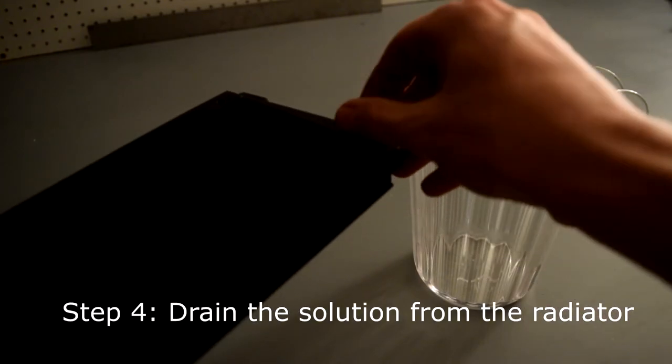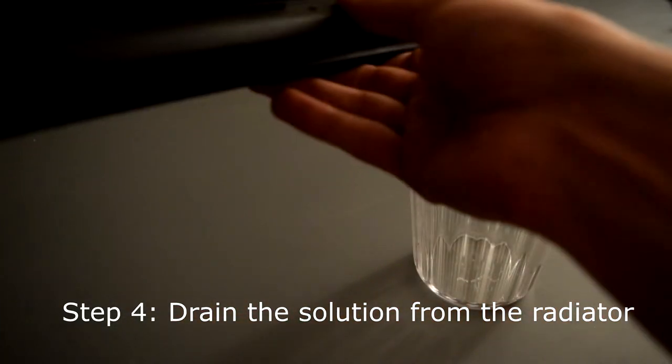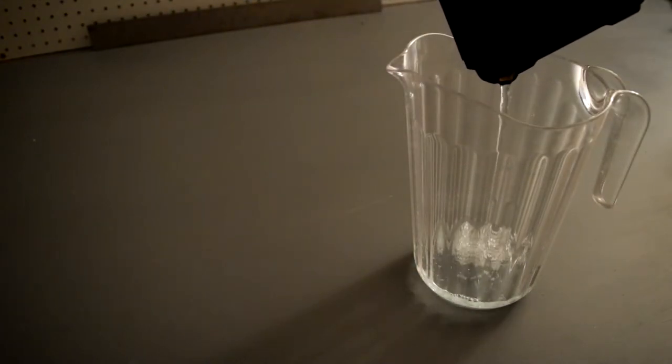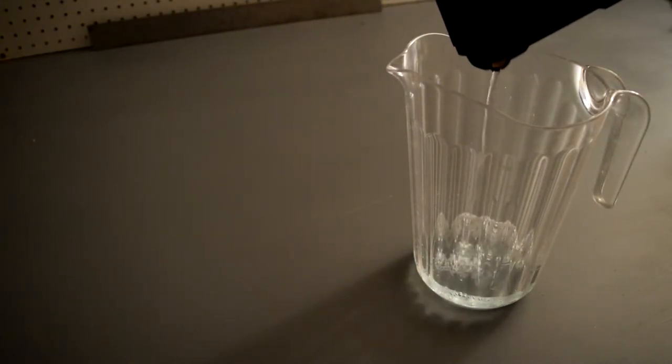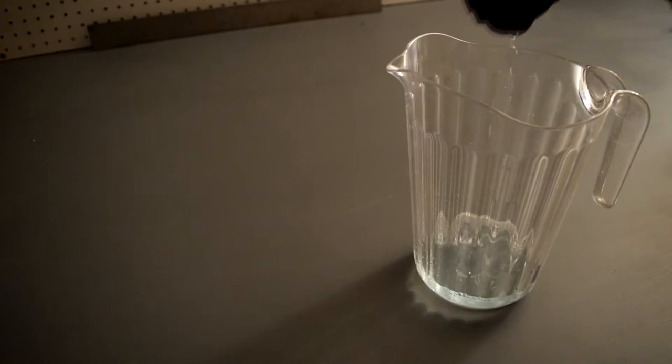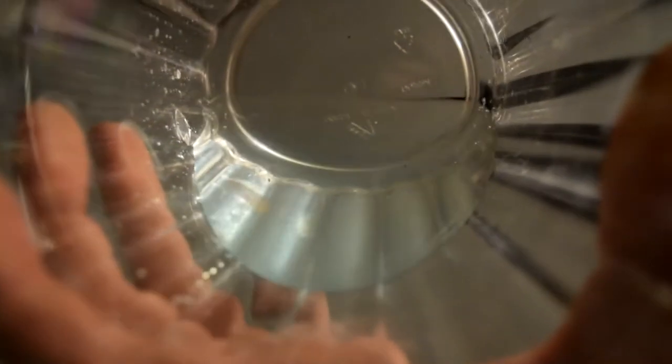Step 4. Drain the radiator of the solution that you put in during step 2. As you can see, Mayhem's part 1 solution has removed debris from the radiator as well as the tarnishing inside of it.